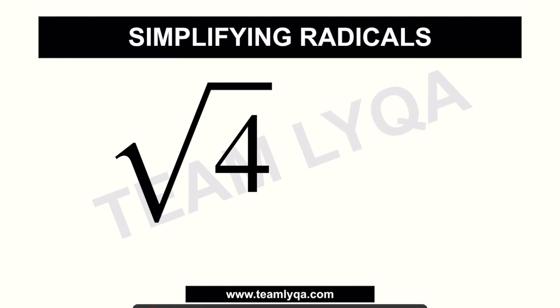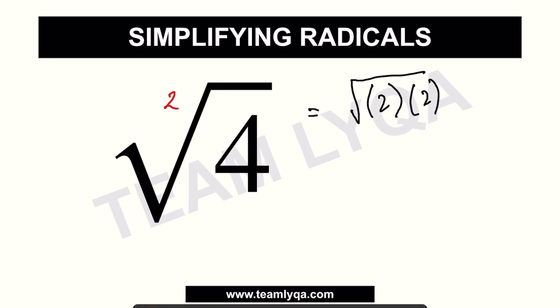Kapag meron tayong square root na ganito at walang index, ang ibig sabihin ay automatic ang index niya ay 2. And what that means is, if we factor and there are two of a kind — dalawang factor na pareho yung number — pwede nating ilabas dun sa payong. So if we have 4, ang square root of 4 is like square root of 2 times 2. Dahil dalawa yung 2 at ang index ay 2, pwede nating ilabas. So this will be equal to 2. Ang square root of 4 is 2.